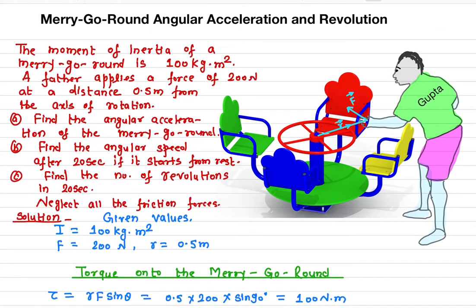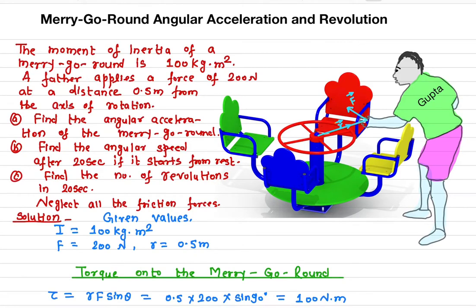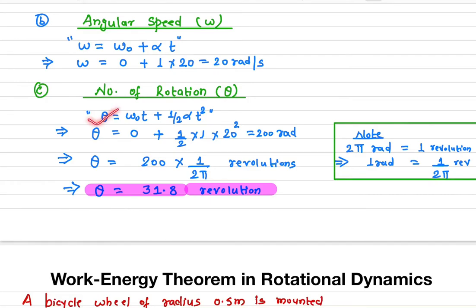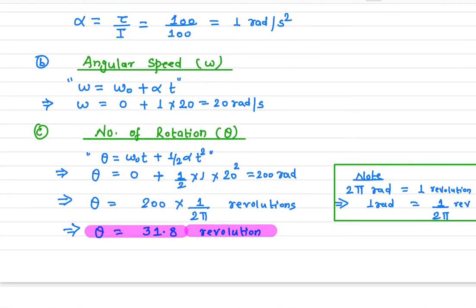In 20 seconds, how many revolutions has the merry-go-round made once the torque is applied? Revolution in rotational dynamics is equivalent to displacement in linear motion, so we need to find theta. We recall the linear equation s = ut + ½at².